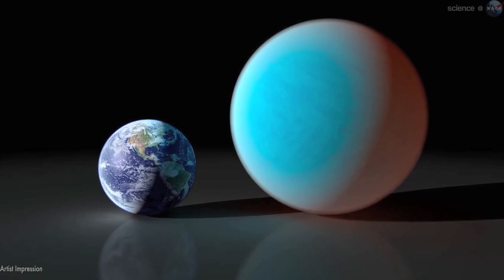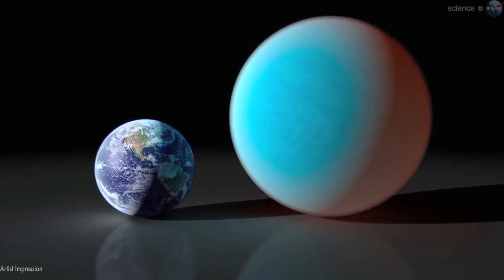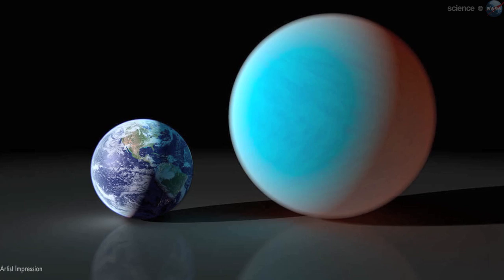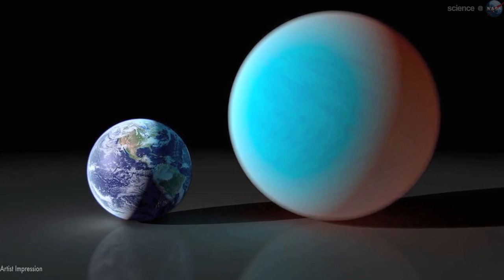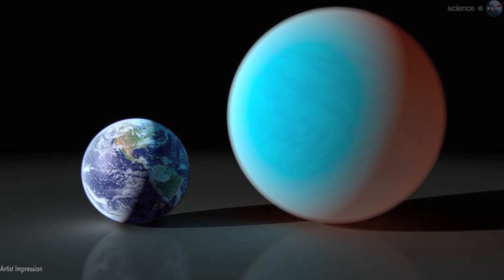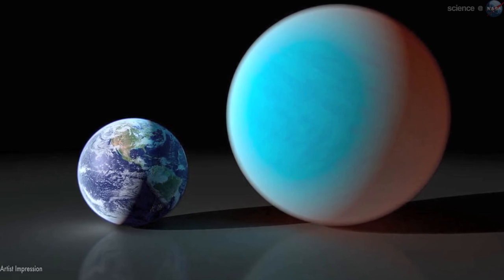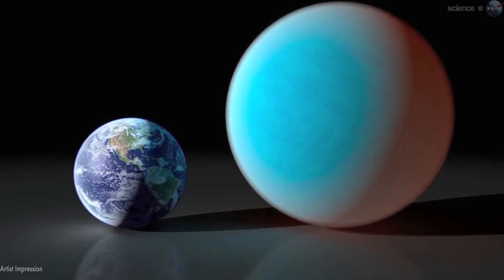According to the new observations, 55 Cancri e has a mass 7.8 times and a radius just over twice that of Earth. Those properties place 55 Cancri e in the super-Earth class of exoplanets, a few dozen of which have been found.